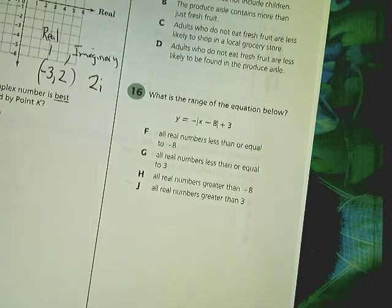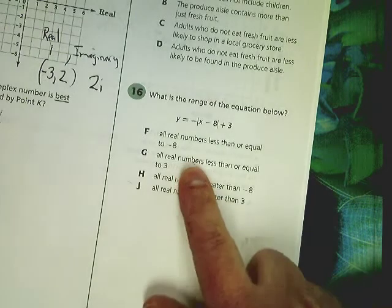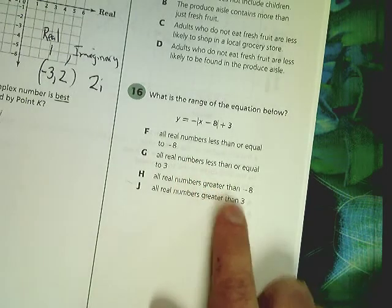F is all real numbers less than or equal to negative 8. No, something with 3, right? So, it's either going to be g or j. G says all real numbers less than or equal to 3. So, that seems very reasonable.